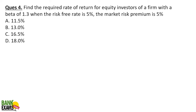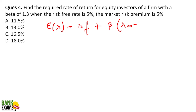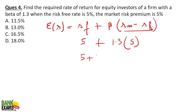Next: find the required rate of return for equity investors of a firm with beta of 1.3. Risk-free return and market risk premium are given. Pause the video and try to solve it yourself. Expected rate of return = risk-free return + beta × market risk premium. Market risk premium is 5%, beta is 1.3. Risk-free return is 5%. So: 5% + 1.3 × 5% = 5% + 6.5% = 11.5%... actually the answer given is 5 + 8% = 13%. Very easy question.